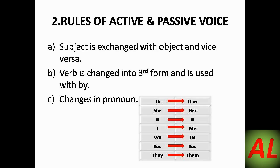Now let's see the rules for changing active voice sentences into passive voice. In the example 'he drives car,' 'he' is the subject. In passive voice, the subject comes at the end of the sentence, and 'car,' which was the object, comes at the start. So the subject and object replace each other.